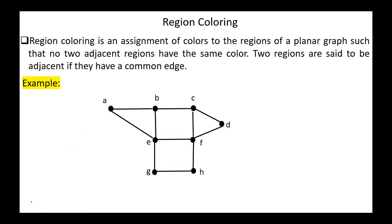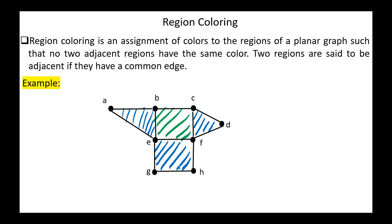Next, region coloring. Region coloring is an assignment of colors to the regions of a planar graph such that no two adjacent regions have the same color. Two regions are adjacent if they share a common edge. For example, we can color the regions in this graph using green and blue, and we only need two colors.